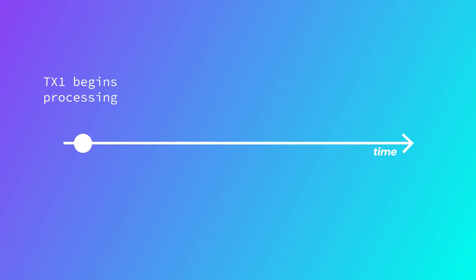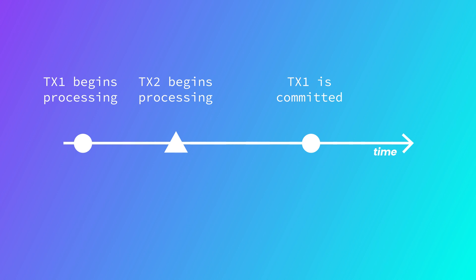However, imagine we're a global bank and this is a corporate account. There might be hundreds or even thousands of queries trying to interact with this same row at more or less the same time. Here's how that could play out. TX1 begins processing, but it doesn't lock the row when its SELECT statement is executed because it's not SELECT FOR UPDATE. While TX1 is still processing, TX2 comes in and begins processing against that same row. TX1 finishes processing, but now the value of the row that TX2 was updating has changed. This causes TX2 to fail, requiring a retry. Failing and retrying is less efficient than just putting TX2 into a queue to wait until TX1 is done processing.